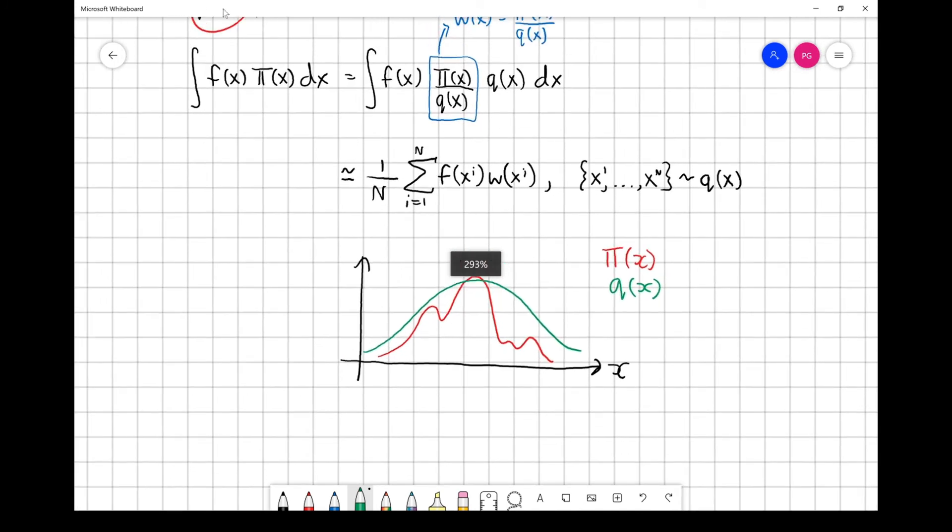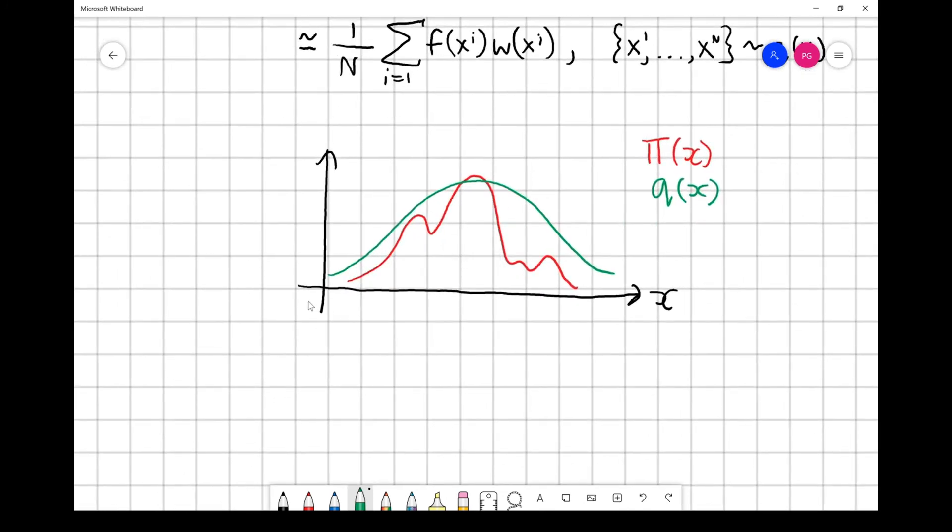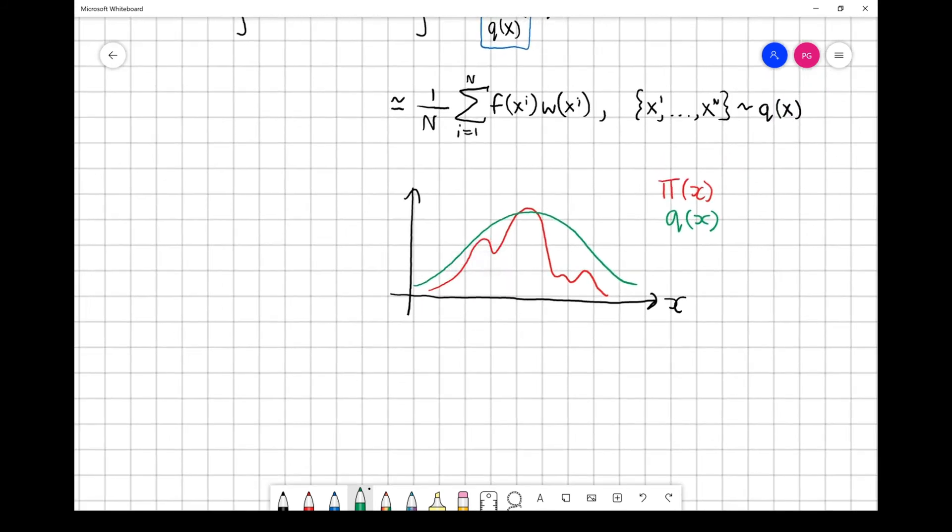In the ideal case, your proposal would actually be completely equal to the target. So if Q equals π, then this would cancel, this would be unity, and this would become π, so you'd be left with the original integral. What we've done here is we've been lucky, and we happen to have suggested a proposal that has roughly the same support as the target.